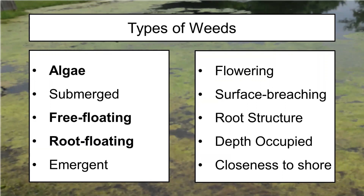When we did this program last year, we talked primarily about algae, free floating plants, and root floating plants, because those three groups represent some of the most nasty weeds I usually encounter. This year I'm also going to include submerged plants because I'm getting more and more questions about these kinds of plants, and I definitely want to cover some information that should hopefully help you out.